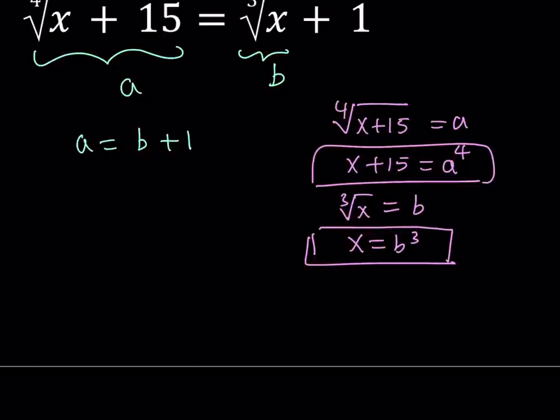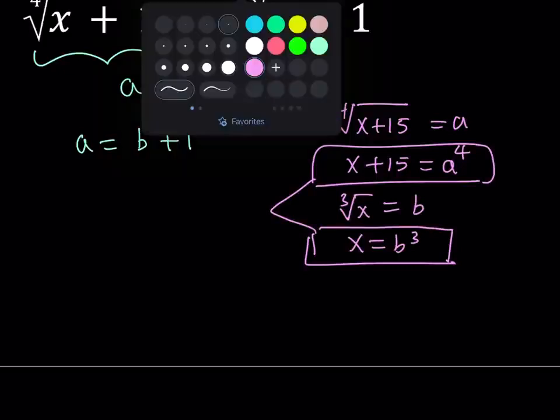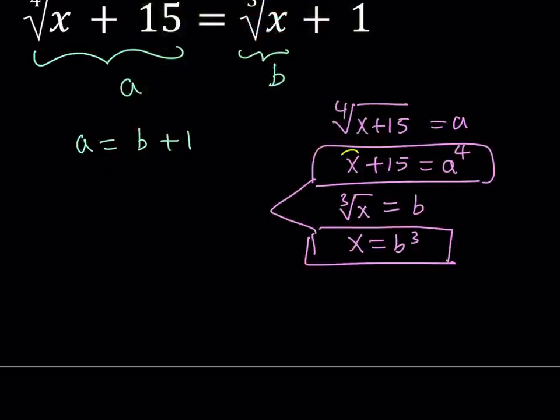So these two equations, basically we were able to get rid of the radicals by using these two equations. But now we have three variables. We also need to get rid of X. How do we get rid of X? Well, if you look at these two equations here, notice that the bottom one gives you X equals B cubed. So in the top one, you can just go ahead and replace X with B cubed from here. And then that way you'll get rid of X. Let's go ahead and do it. Replace X with B cubed. So we get B cubed plus 15 is A to the fourth power.